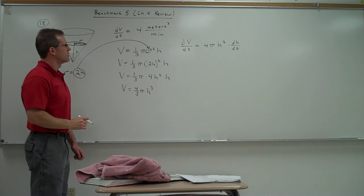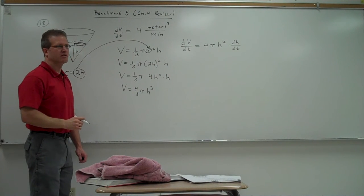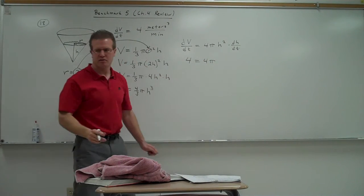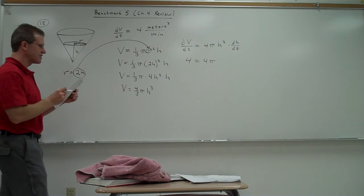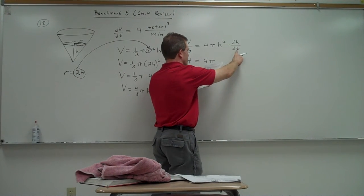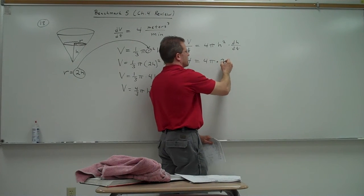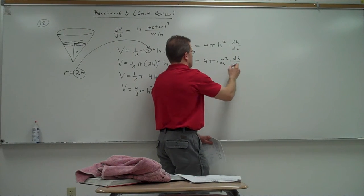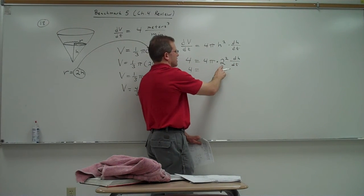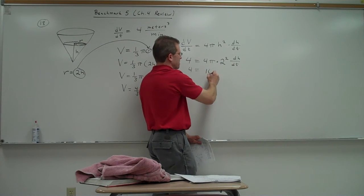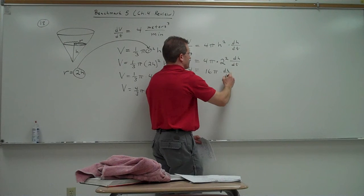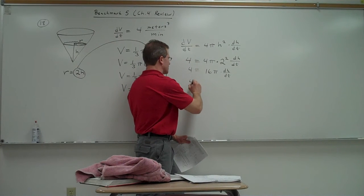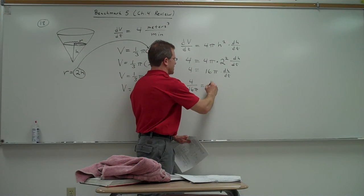Now we can start plugging in our numbers. What could I plug in for dv over dt? 4. And the question said, how fast is the water level rising? So we're trying to find dh dt when the water is 2 meters deep. So the height of the water would be 2. So plug in a 2 for h. That's going to give us 4 equals 2 squared is 4 times 4 pi would be 16 pi and dh over dt. What would be the next step? Divide by 16 pi. Divide by 16 pi on both sides. You get 4 divided by 16 pi equals dh over dt.